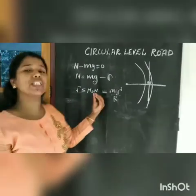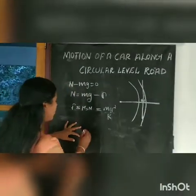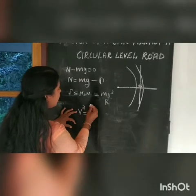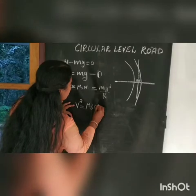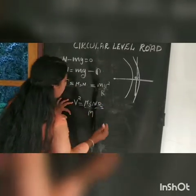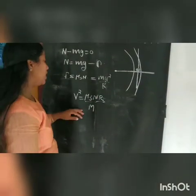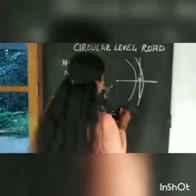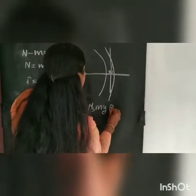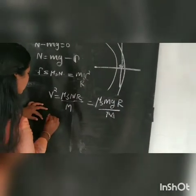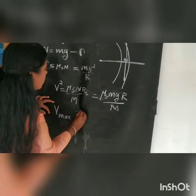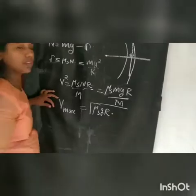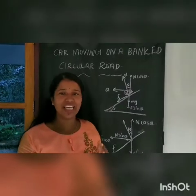Our aim is to calculate the maximum velocity. From the equations, V squared equals mu_s times N times R divided by M. Substituting N equals mg, the M cancels, giving us the final equation: V_max equals the square root of mu_s times g times R. This prevents skidding of a vehicle on a curved level road.